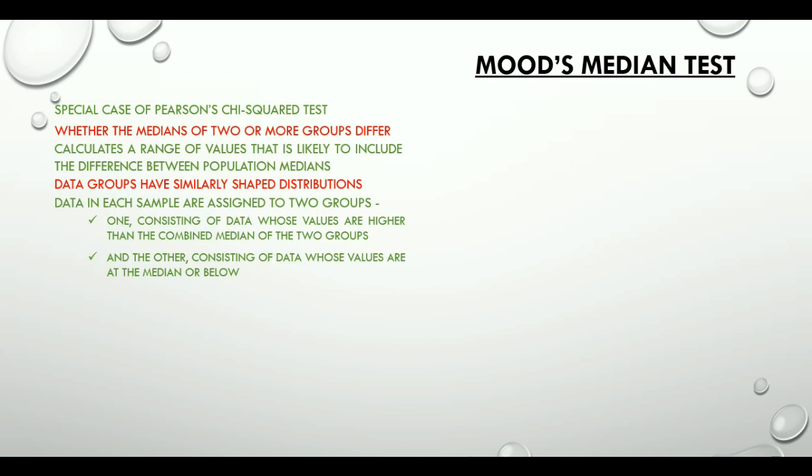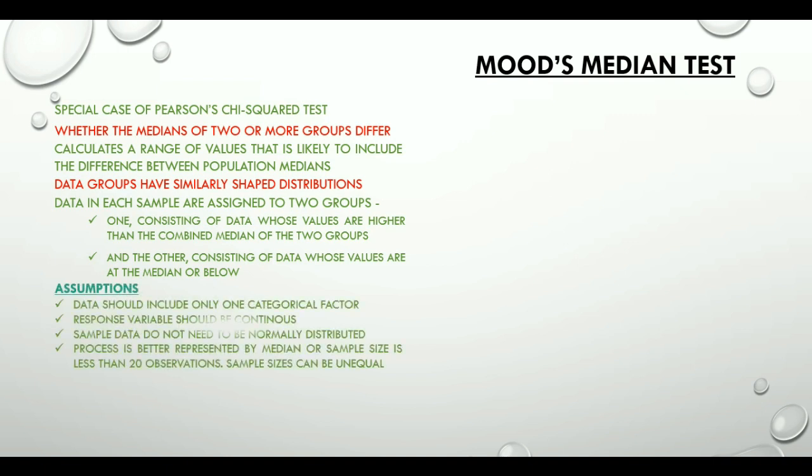Assumptions of a Mood's median test are that data has only one categorical factor. We have a continuous response variable. Sample data is not mandatory normally distributed. Process is better represented by median or sample size is less than 20 observations and yes sample sizes can be unequal too.